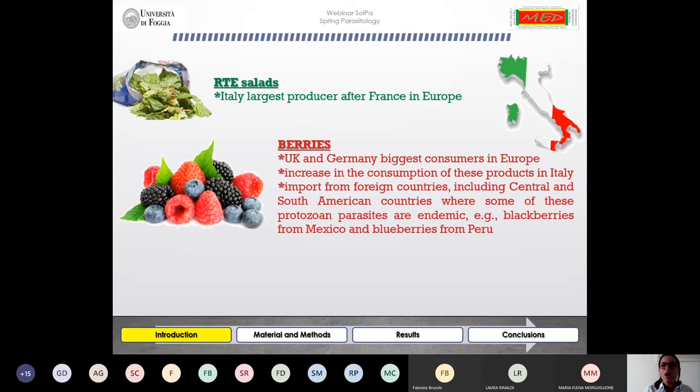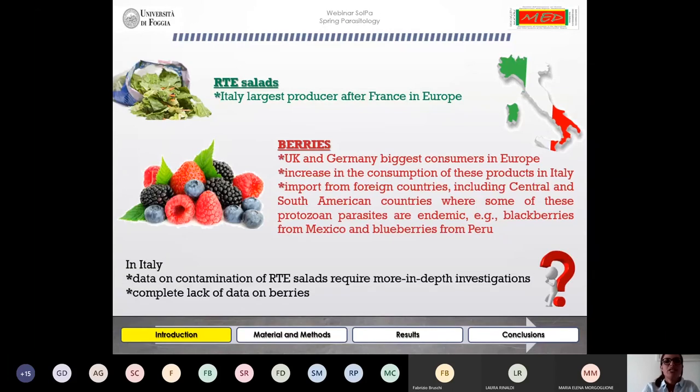However, the increase in the consumption of these products in Italy registered in the last few years has led to the need of importing berries from foreign countries including Central and South American countries where some of these protozoan parasites are endemic. What's the situation in Italy? We have some data on contamination of ready-to-eat salads, however it requires more in-depth investigation, whereas there is a complete lack of data on berries.